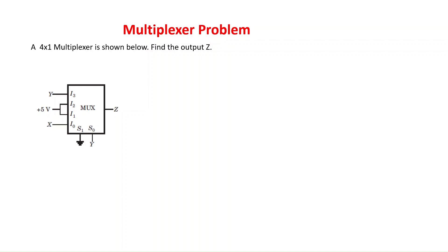In this question we have to find the output Z, and the inputs and select lines are given. In this circuit, S1 is grounded so S1 is 0, and S0 is Y. Input lines are: I0 is X, I1 is +5 volt which means 1, I1 and I2 both are 1, and I3 is Y.